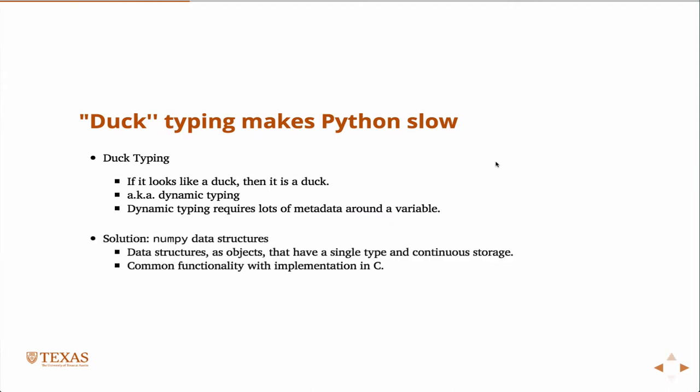So what NumPy does is it gives you a set of data structures as objects, and of course, everything in Python is an object, that have a single type. So the data structure would be like an array of floats or array of integers.